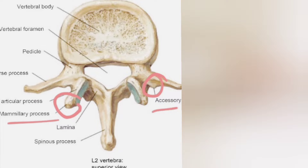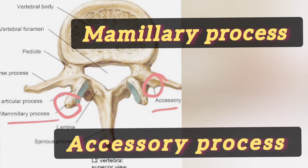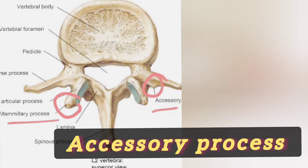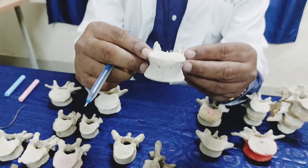In addition to all these features, a lumbar vertebra has two additional features. One is the mammillary process, and another is the accessory process. The mammillary process is present on the posterior border of the superior articular process as an elevation. The accessory process is a small tubercle at the root of the transverse process.